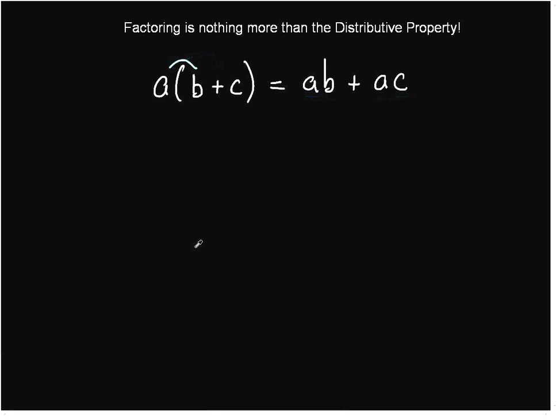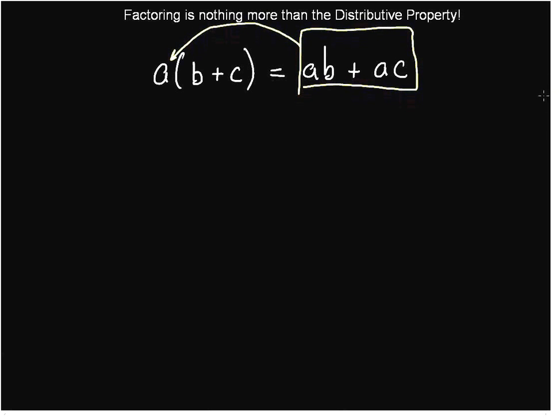Now, factoring goes the other way. We are going to be given this, and we are going to have to bring a common factor out. That's the difference. There's no forwards and backwards on the distributive property, really. The equal sign is bidirectional, so you can go both ways. All right, so let's take an example and see if we can figure this out just a little bit.